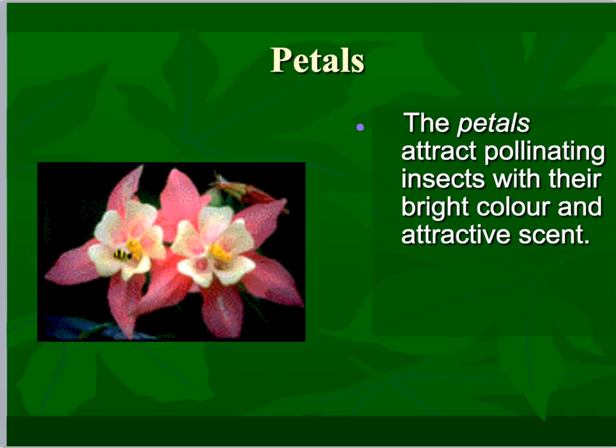The petal's main function is to attract the pollinators. Depending upon what the pollinator is, it can have different appearance, different colors, different scents as well — all with the purpose of attracting those pollinators. Whether it's an insect, a bee, a bat, a bird, whatever the case may be, the petal's main job is to attract the pollinator.